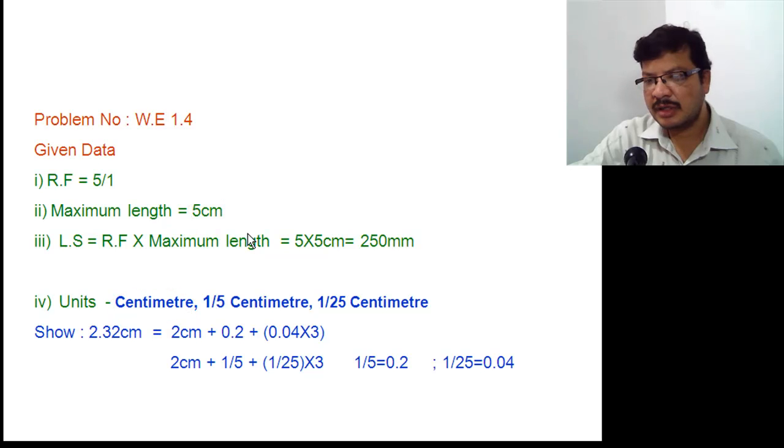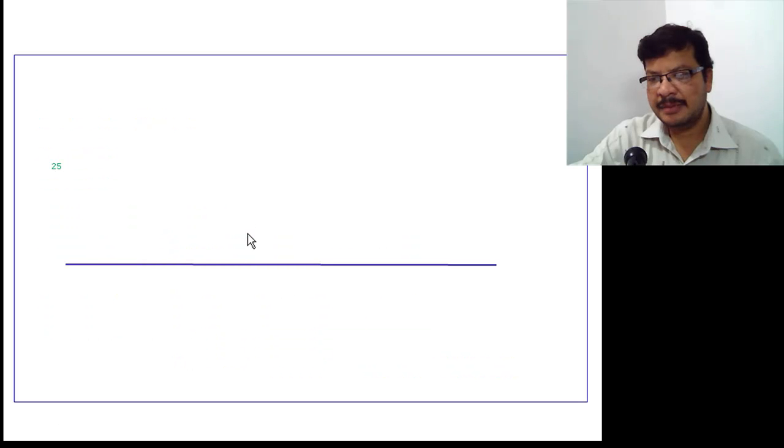Start with drawing a line of length 250 mm. This line length is 250 mm. Towards the right hand side, the cm unit is there, and towards left hand side, 1/5 cm, and along the diagonal, 1/25 cm can be obtained.